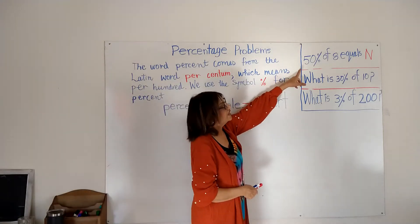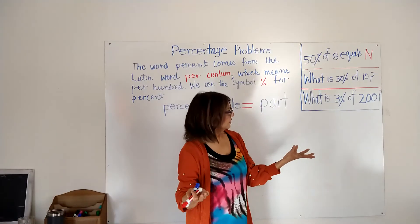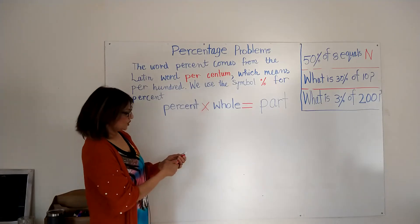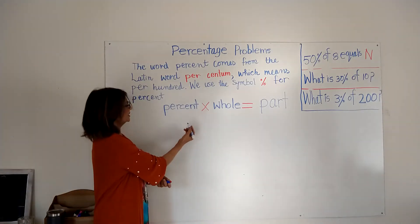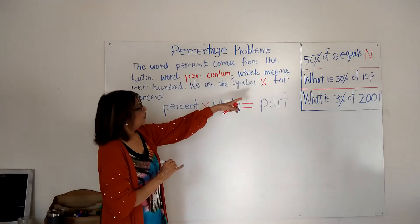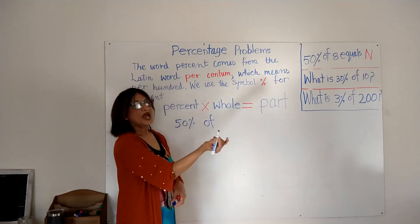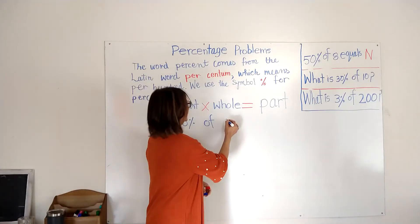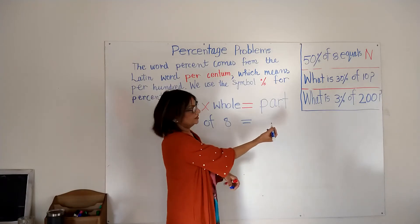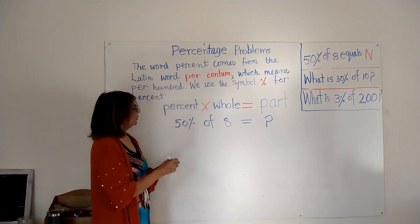I have three problems to solve. The first is: 50 percent of 8 equals unknown — that's what we're going to find out. So I'll write 50 percent under 'percent,' and since 'of' means times, 8 is our whole. Our part is unknown, so I'll put a question mark there.